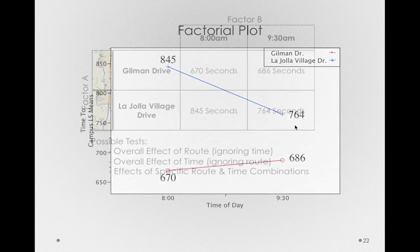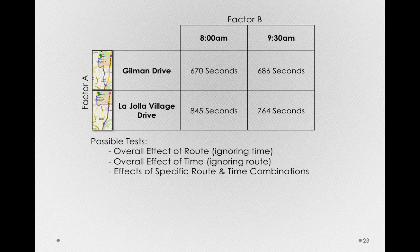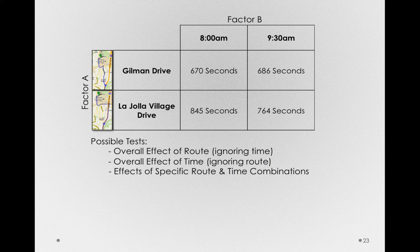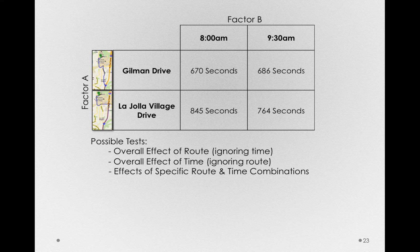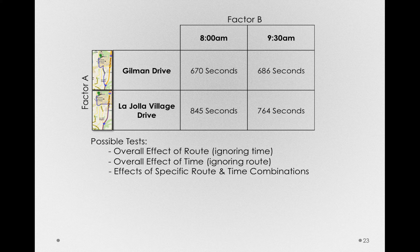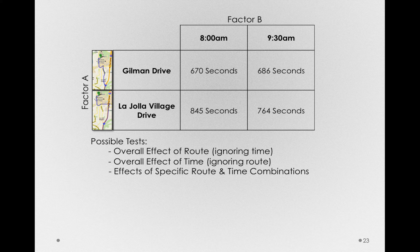So these are the same data we showed before in the table, but now it'll be a little easier for us to actually see each of these possible tests, that is the overall effect of route, time, and the combination of the two.